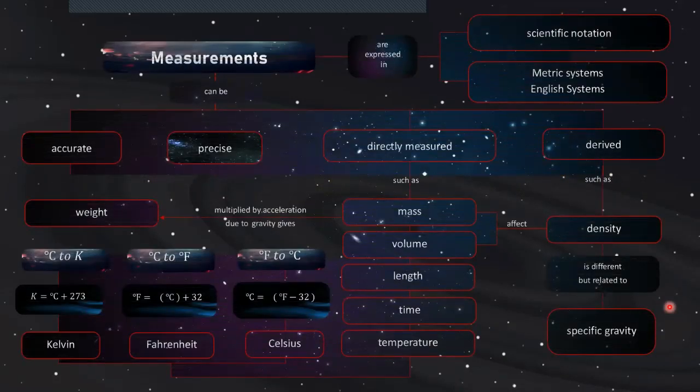Measurements are expressed in scientific notation, metric systems, or English systems. Our measurement can be accurate or precise, or both. It depends on how we measure things or what tool we use to measure an object.